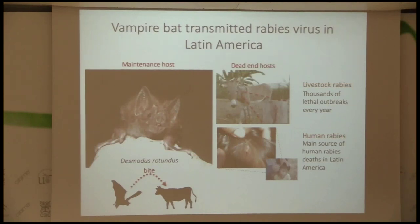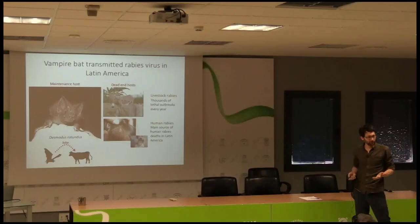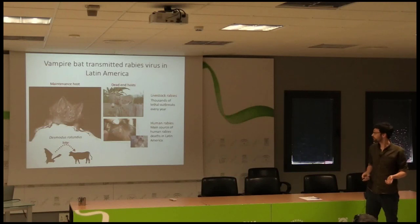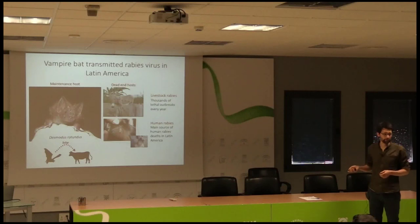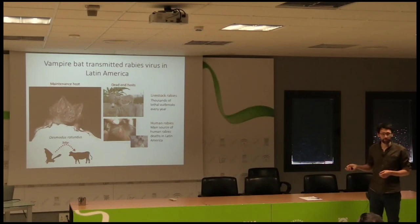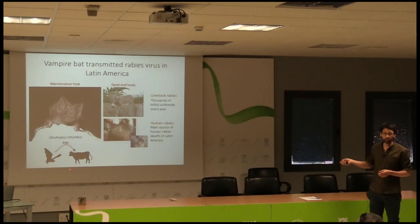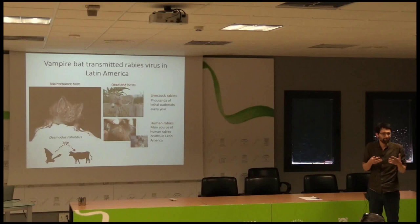That ends up costing at least $30 million every year just in terms of dead cows, and that's predominantly affecting small-scale subsistence agriculture — hitting the poorest people in some of the poorest countries in South America. In terms of human rabies, it's also now the number one source of human rabies mortality throughout much of Latin America. The virus is transmitted as the bats feed on other animals, and also transmitted from bat to bat when they bite each other aggressively.